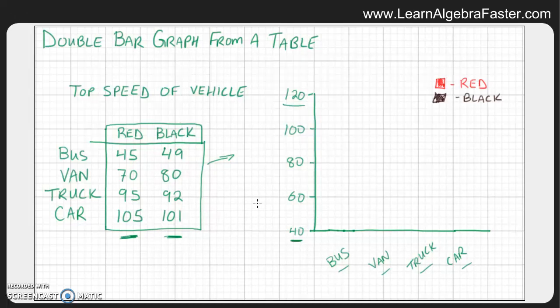Okay, so let's take a look. So let's figure out the top speed of a bus, of a red bus. And so we'll come here for that, and that is about 45. So we'll show it. Now let's go to the van, which is 70. That is right about here. We make our bar for it and color it in.